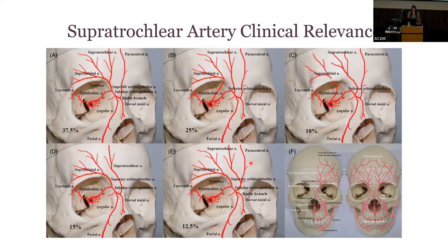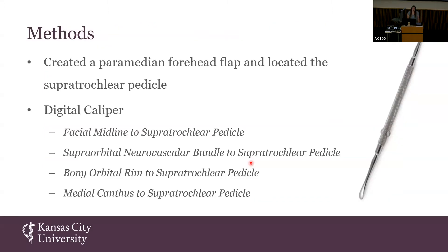In this study, we aim to triangulate the location of the supratrochlear artery pedicle relative to known anatomical landmarks and outline a danger zone during dissection, which aids the surgeon in creating maximum flap length and mobility while limiting pedicle disruption and flap compromise. We created a tissue flap with a scalpel and then used a freer elevator, which lifts the periosteum off the bone to best locate the supratrochlear artery pedicle. To triangulate a danger zone surrounding the supratrochlear artery pedicle, four measurements were taken using a digital caliper by the principal investigator to ensure validity and consistency.